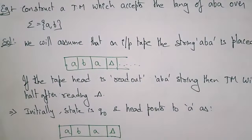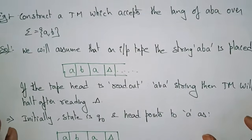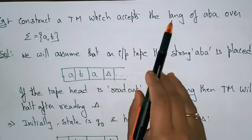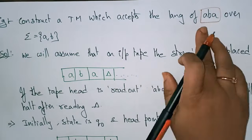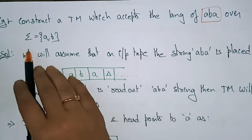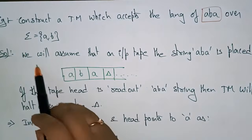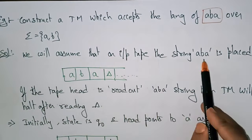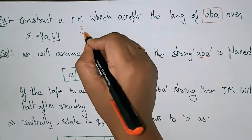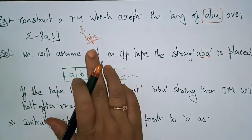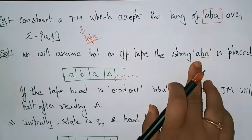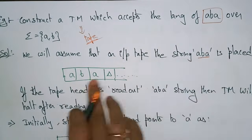Now let me explain what is the language accepted by the Turing machine with an example. Here we are given: construct a Turing machine which accepts the language ABA — a string over the alphabet A and B. We will assume that in the input tape, the string ABA is placed. In the Turing machine, we use the concept of a tape rather than a stack. The tape is divided into a number of cells, and in those cells you place each symbol of the string.